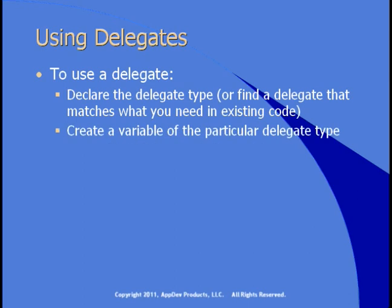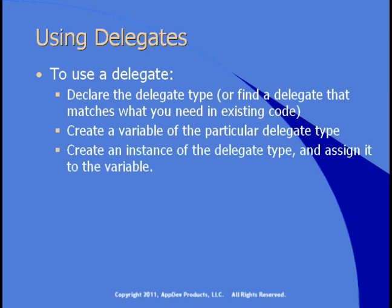You need to create a variable of that particular delegate type — though that's not always required. In the array.findAll example, we just passed the address of a procedure directly. You can also create an instance of the delegate type and assign it to the variable, or if you want to invoke the delegate directly, you can just invoke the procedure. Let's look at how we can declare a delegate and invoke it in our next demonstration.